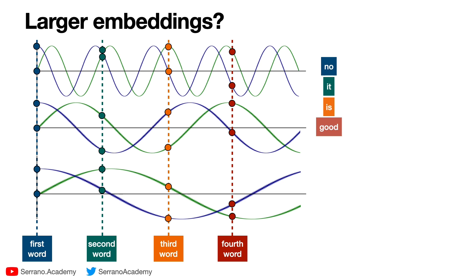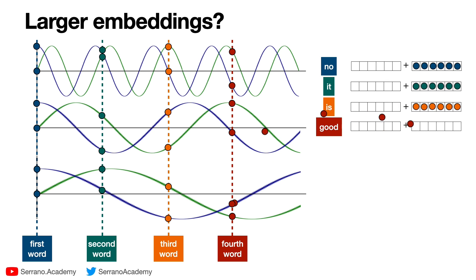So when I have the sentence 'no it is good,' now each word goes to six numbers because the embedding has six dimensions. So to the first word I'm going to add this vector over here, that means I'm going to move it in this direction in six-dimensional space. For the second word, I'm going to add the vector corresponding to the six numbers, and then for the third word and then for the fourth word.